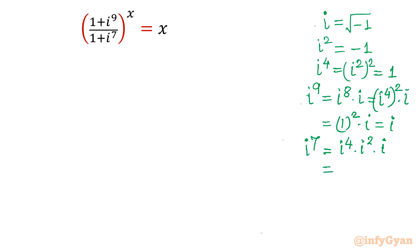Now put the value of i^4, it is 1. i square, negative 1. i as it is i. So overall we will be having minus i. i^7 is negative i. i^9 is plus i. So let me put both the values in the given equation. So equation will convert (1 + i)/(1 - i) whole power x. It is equal to x.